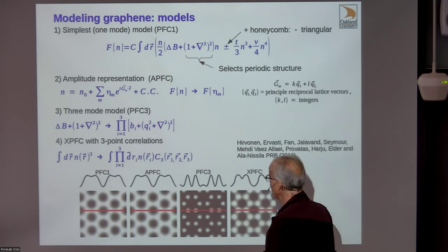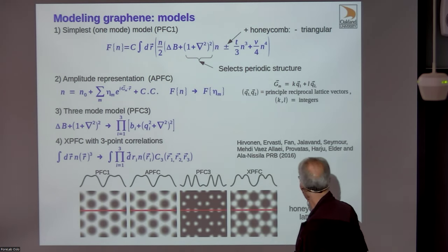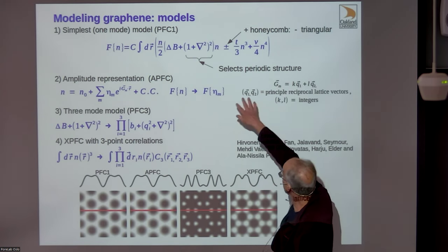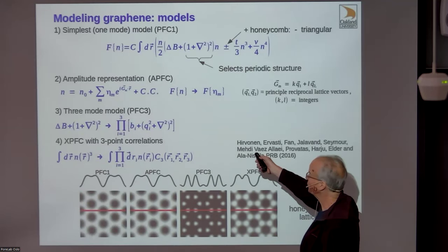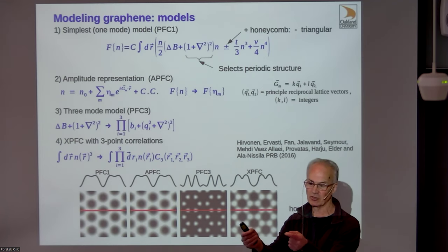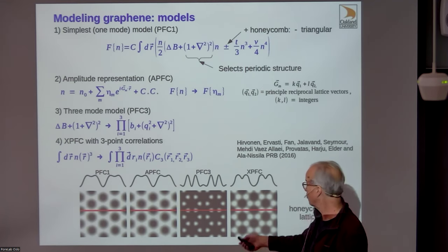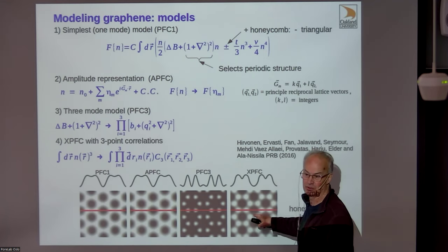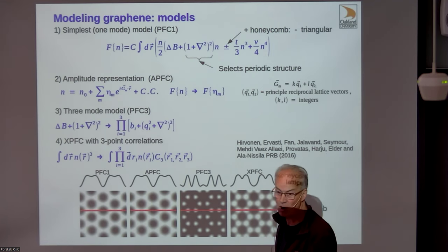One approach adds more length scales. There's also a nice paper from the McGill group who added three-point correlations to the free energy. Two-point correlations only select length scales, but with three points you have an angle, so you can set the three-point correlation to specify 120-degree bond angles, square symmetry, or—if you choose an irrational angle—a quasicrystal. It's a very powerful method, though computationally more expensive.